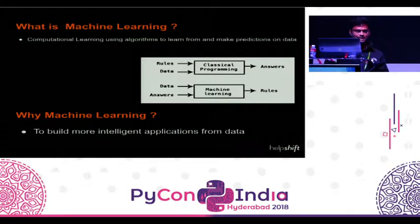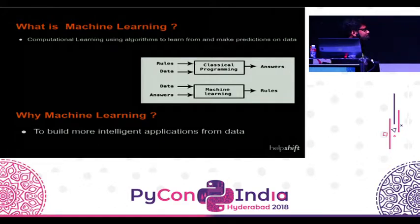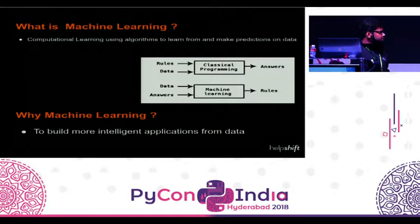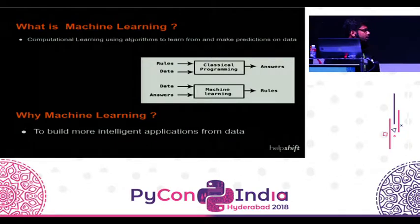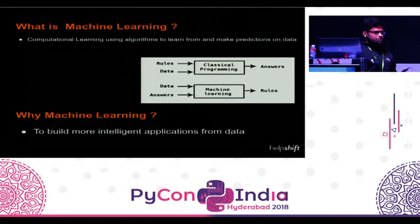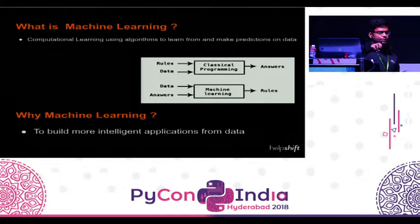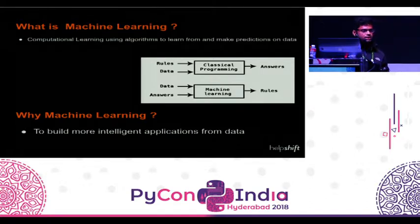Quite a large number — this will be a very exciting talk. Classical programming is like you define a rule, you give data, and you get answers. But machine learning is different: you give data, you give answers, and the rules get embedded in a model, which you then use for real-time predictions.